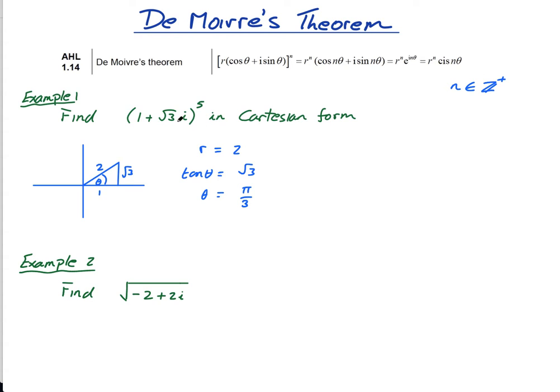So now this thing, this 1 plus root 3i to the power of 5, is equal to 2 times cos of pi over 3 plus i times sine of pi over 3. But this to the power of 5 means it's this all to the power of 5.